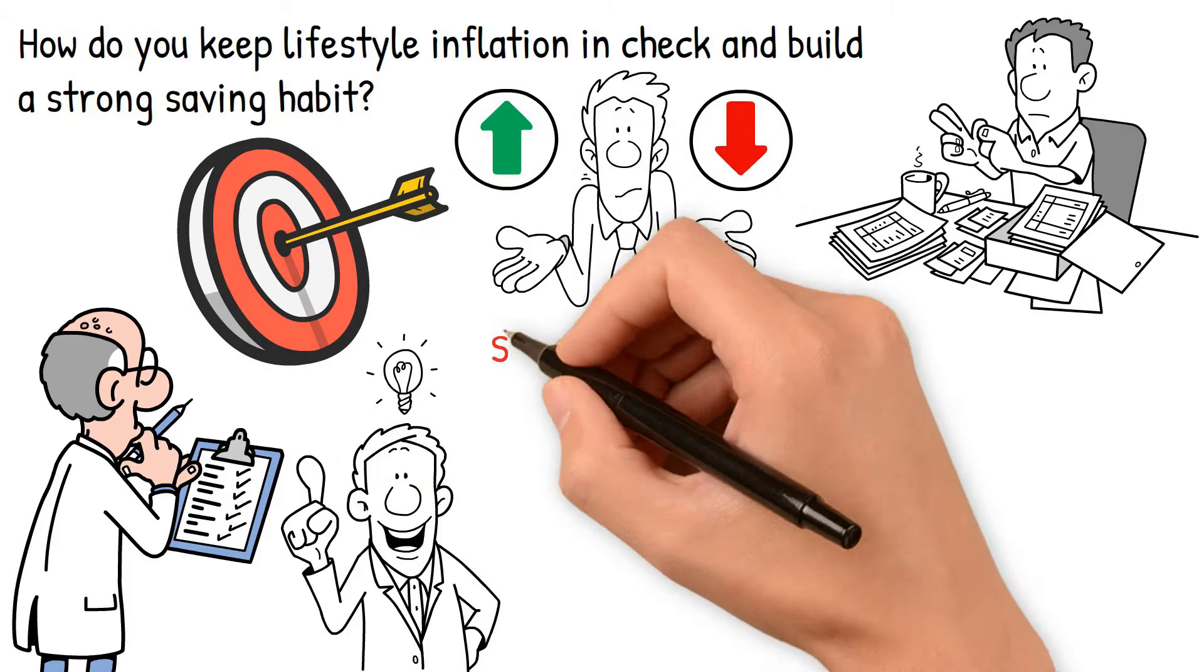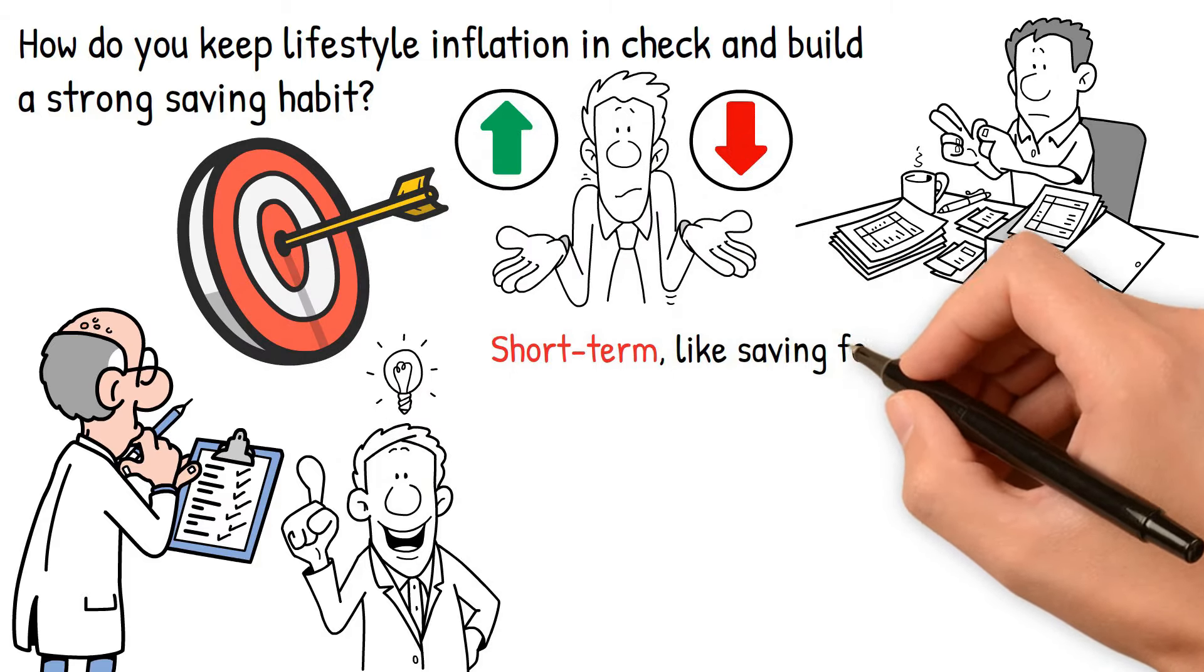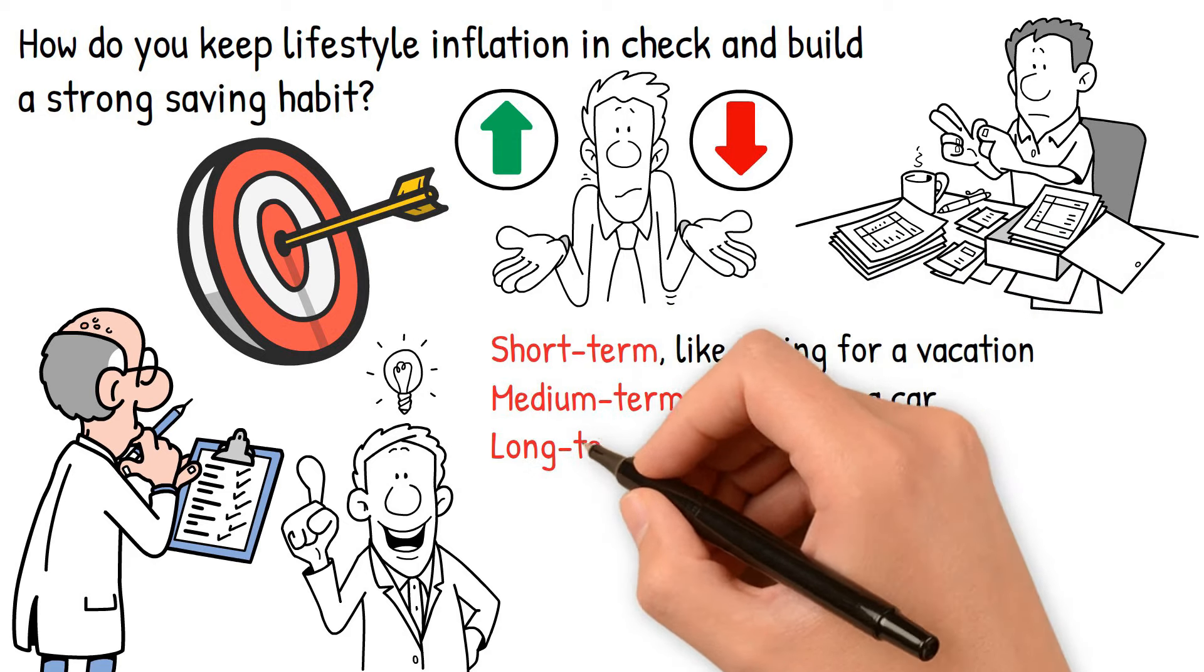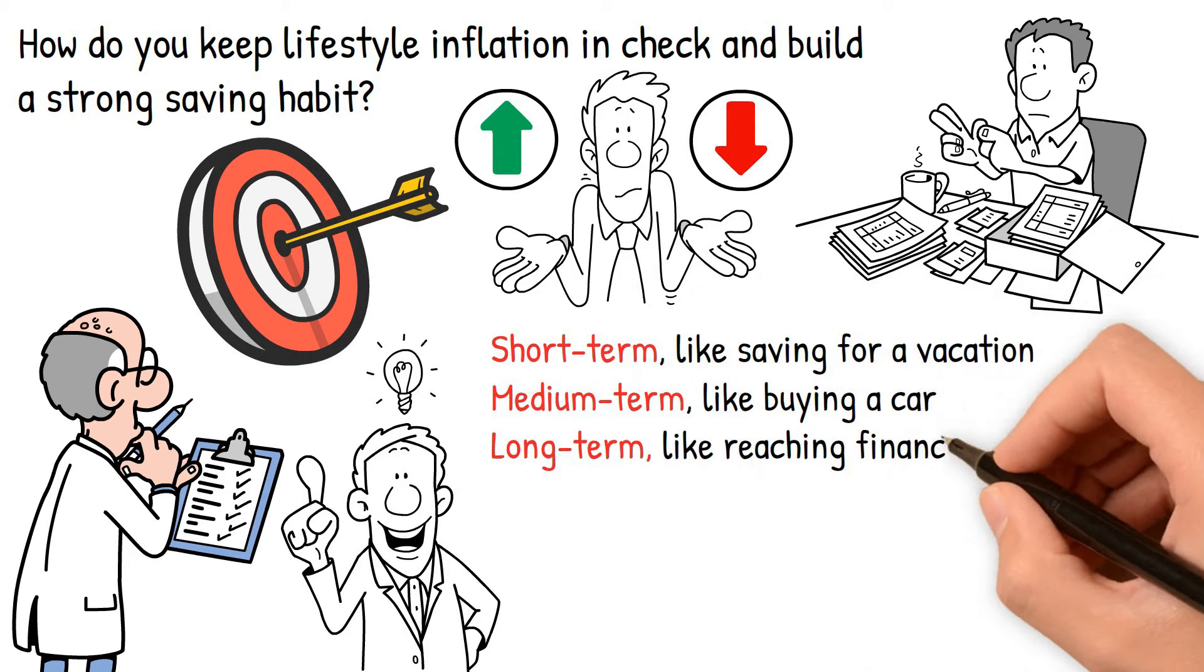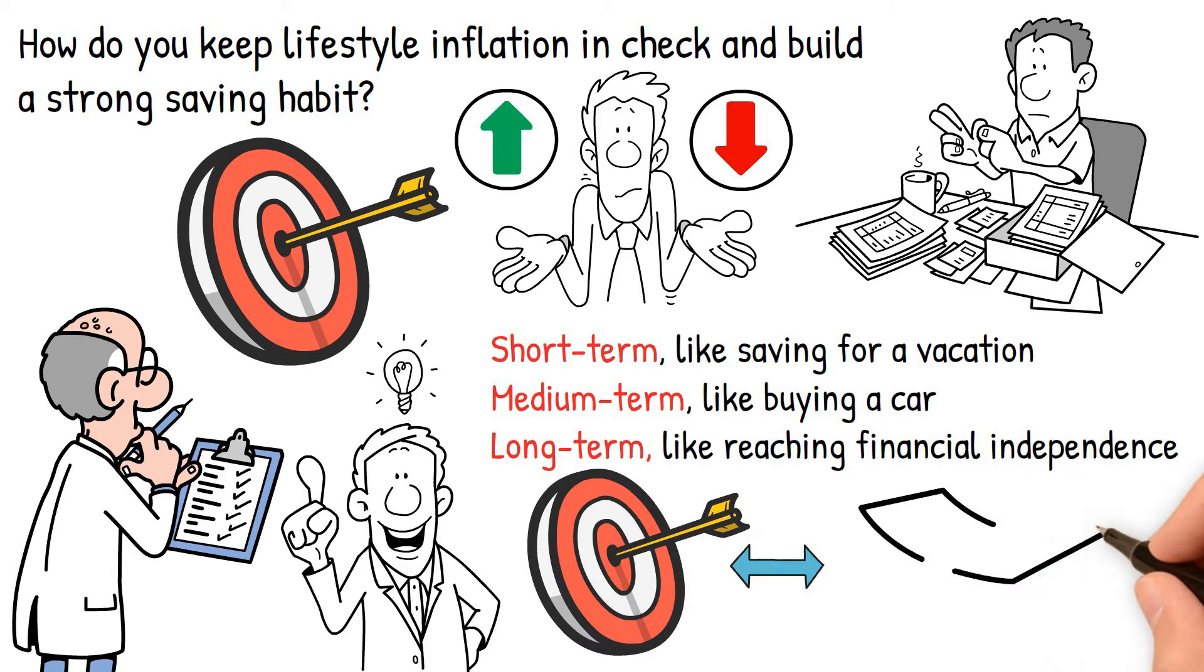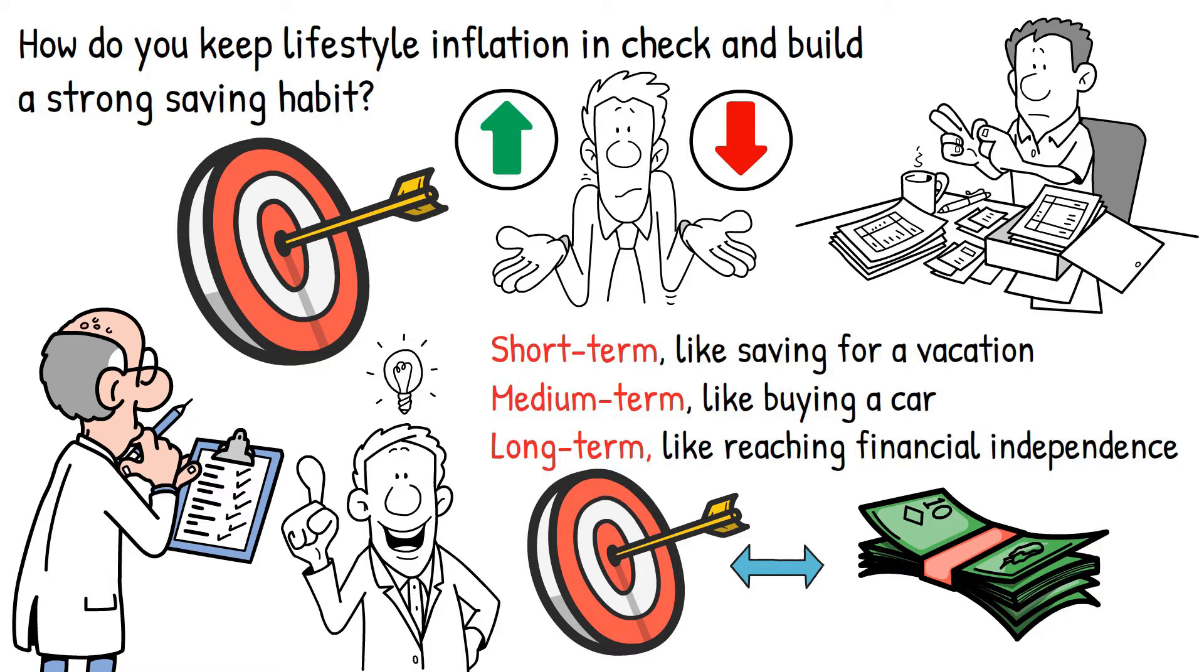Once you have a budget in place, set ambitious but realistic goals. These goals could be short-term, like saving for a vacation, medium-term, like buying a car, or long-term, like reaching financial independence. Your goals should align with your budget and savings capacity to ensure they are achievable.